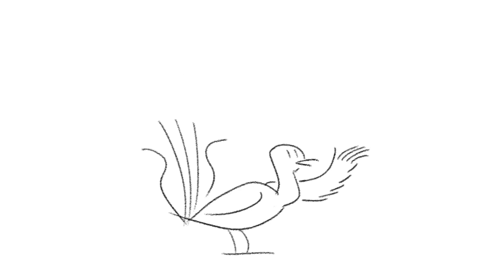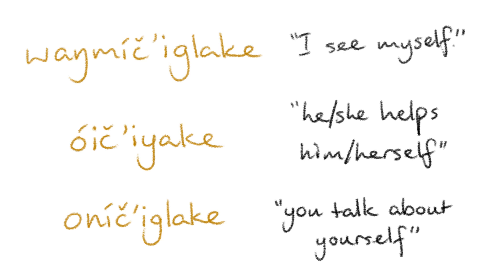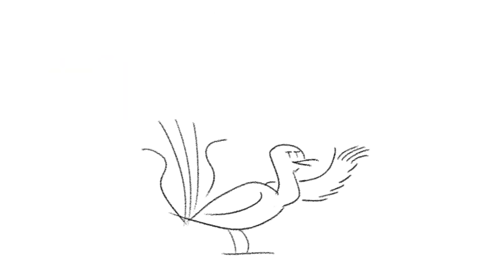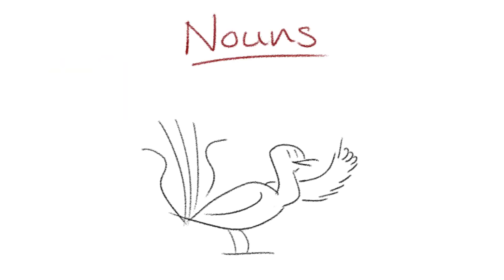Oh, and by the way, I forgot to mention that any time the subject and the object are the same person, a reflexive form of the verb is used instead, usually created with the affix itchi. But I'm fairly certain that's enough information for conjugating verbs anyway, so let's finally talk about nouns.